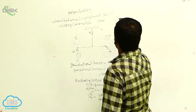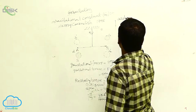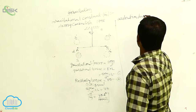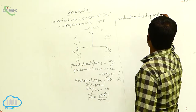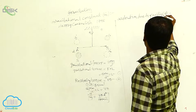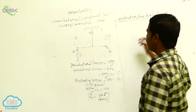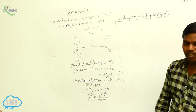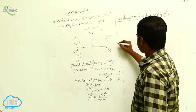Next, acceleration due to gravity — that is small g on Earth. The acceleration due to gravity on Earth we can calculate using the following method.